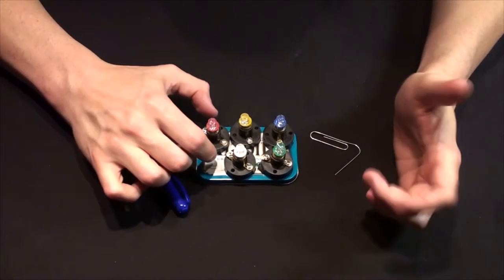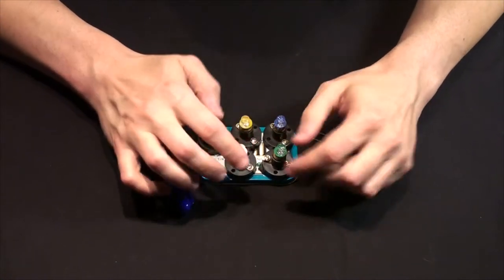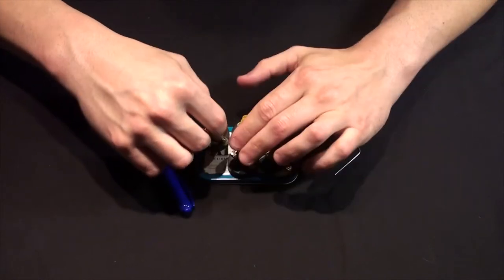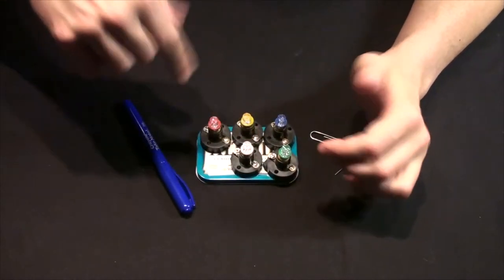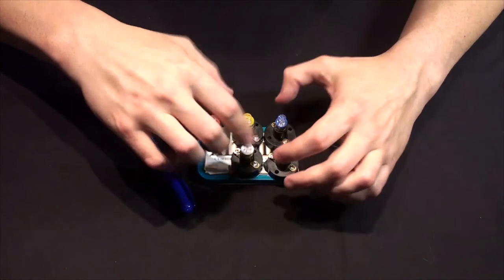Once you get an idea of where you want things, make sure you know you don't have contacts that are going to touch each other. I know you think, well, what if I have them diagonally, wouldn't they touch that way? They just don't seem to do it. So we're good there.